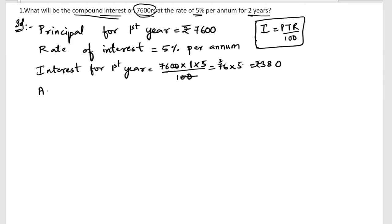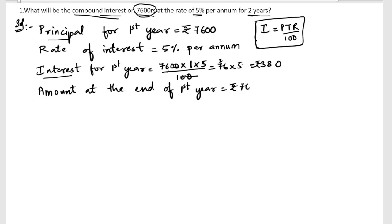Next we can find out the amount at the end of the first year. We need to add the interest and the principal amount to get the total amount. So amount at the end of the first year is rupees 7600 plus rupees 380, which gives us 7980. This amount will become the principal for the second year.